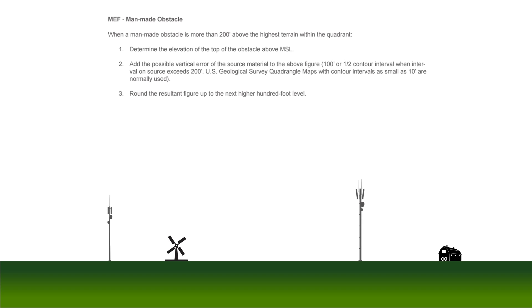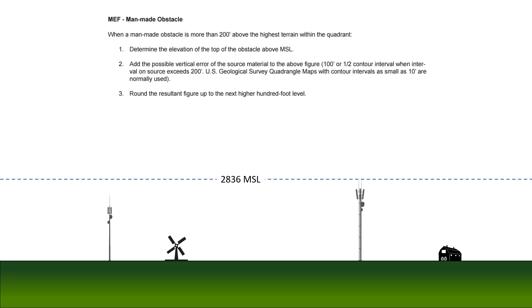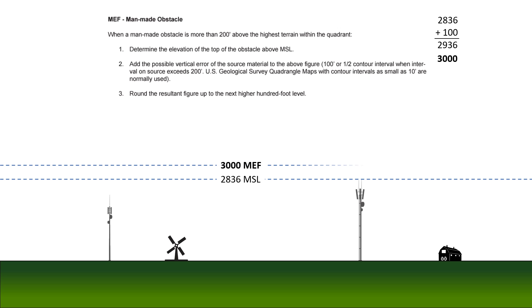So the same tower is generating two different figures for the MEF and the OROCA. Here's how it's calculated. In the Aeronautical Chart User's Guide, which you can find on the FAA website, the first rule deals with when a man-made object like this radio tower is clearly the highest obstacle in the quadrant. The radio tower is 2,836 MSL. We take this elevation and add a possible vertical error, which is typically 100 feet. This sums to 2,936. Then we round to the next highest 100 feet, and that's our MEF: 3,000 feet.